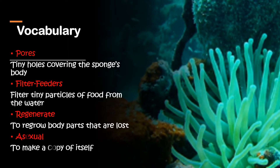Let's take a look at the vocabulary words for this lesson. Pores — pores are tiny holes covering the sponge's body. Filter feeders — filter feeders filter tiny particles of food from the water. Regenerate — regenerate means to regrow body parts that are lost. And asexual — asexual means to make a copy of itself.